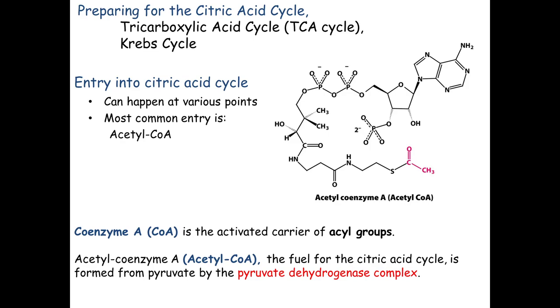Starting today, remember from glycolysis we ended with a pair of pyruvate molecules. Those pyruvate molecules are going to ultimately enter the citric acid cycle after we convert them to acetyl-CoA. The name citric acid cycle has alternative names — it's also known as the Krebs cycle, named after Krebs who described it, and also known as the tricarboxylic acid cycle or TCA cycle.